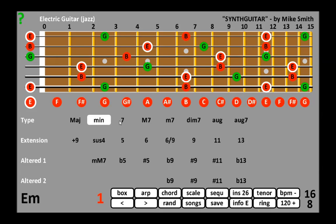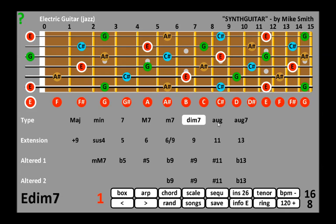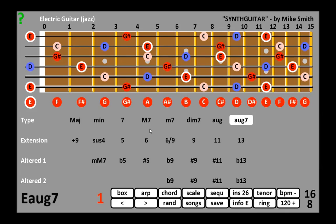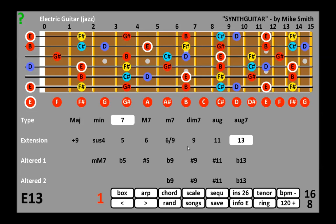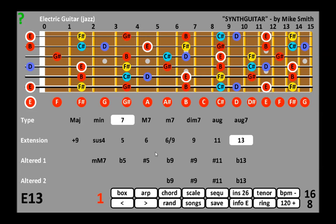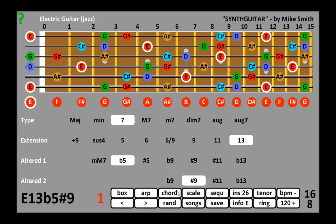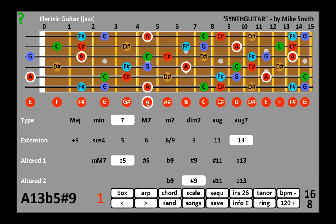Chords can be built up from major or minor triads, sevenths, diminished or augmented forms, and then have extensions and altered notes added. Extended 9th, 11th or 13th chords can be built on the dominant 7th, major 7th or minor 7th. Altered notes such as a flat 5th or a sharp 9th can then be added, up to 2 per chord. All of these combinations are shown on the fingerboard in the current key, with notes colour coded to help you relate to the sound. The type of information shown on each note can be varied by touching the information button.